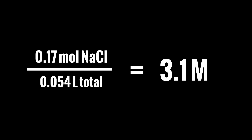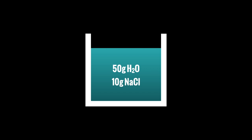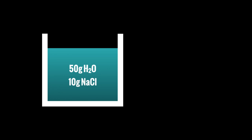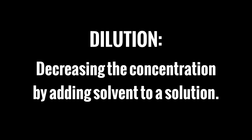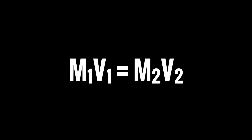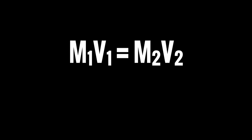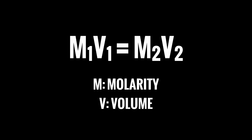Dividing, we find the molarity equals 3.1 M, where capital M stands for molar — a shorthand for moles per liter. So whenever you see capital M, think moles per liter. The molarity of NaCl in our original solution is 3.1 M. Molarity is especially important when discussing dilution. Dilution is when you decrease the concentration of a solution by adding more solvent. We can link molarity and volume using the equation M₁V₁ = M₂V₂, where M is molarity and V is volume.